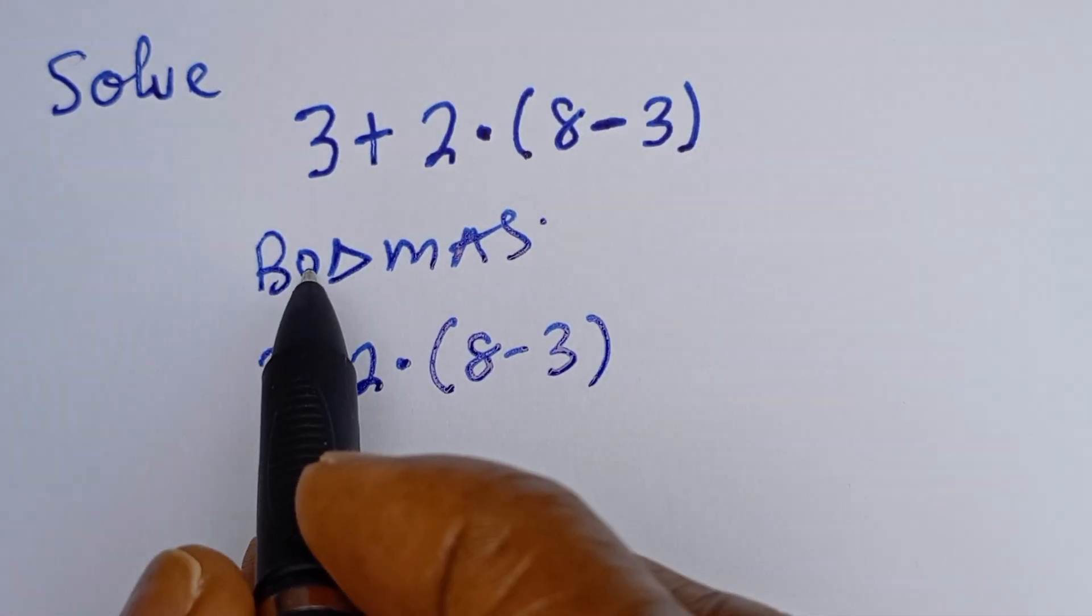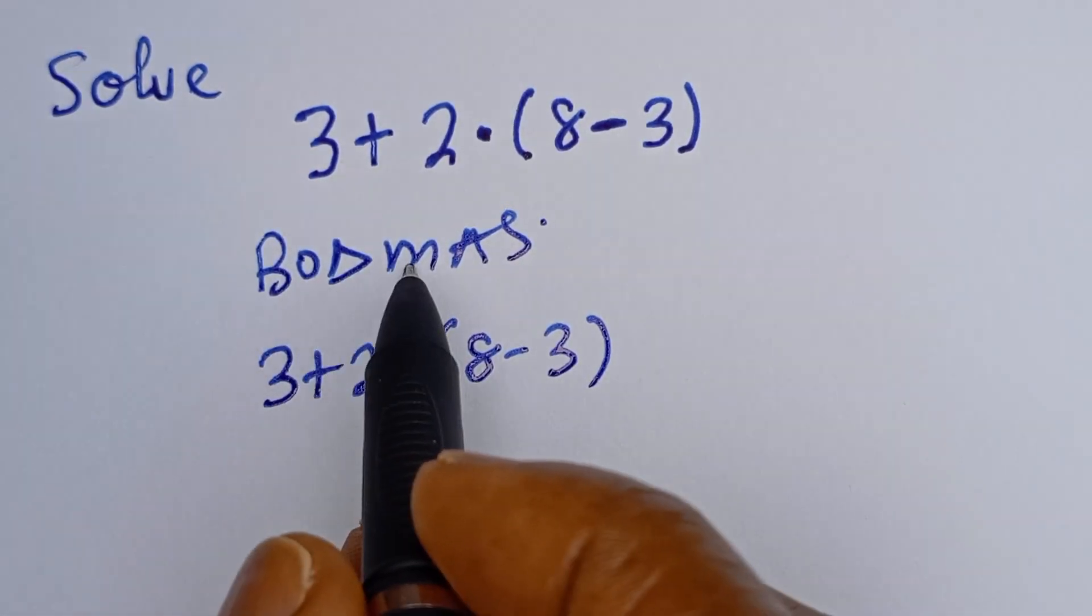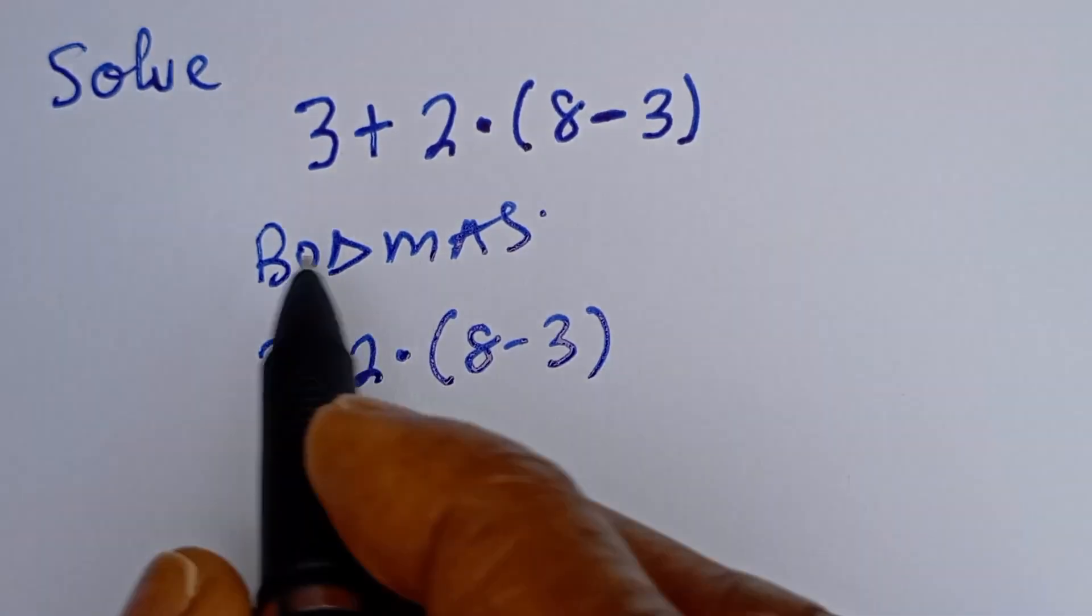BODMAS stands for Bracket, Of, Division, Multiplication, Addition, and Subtraction.